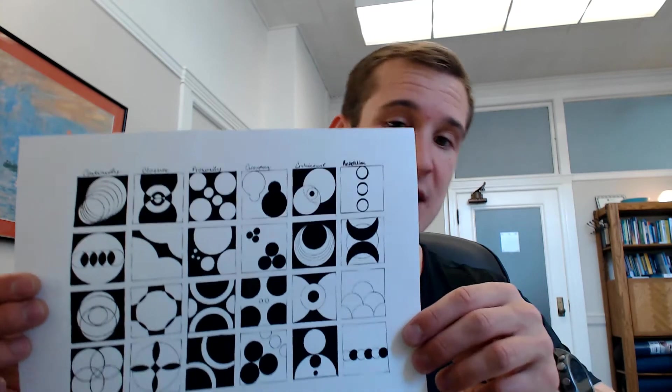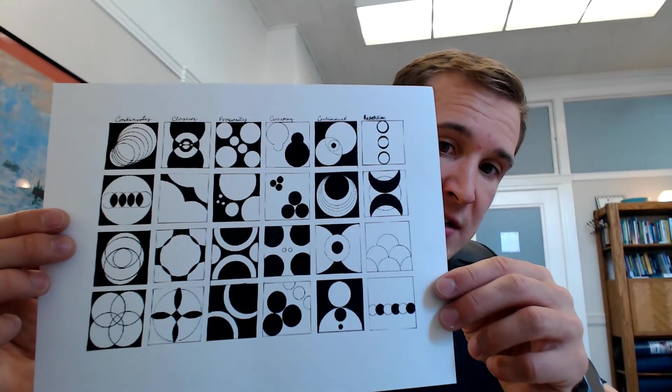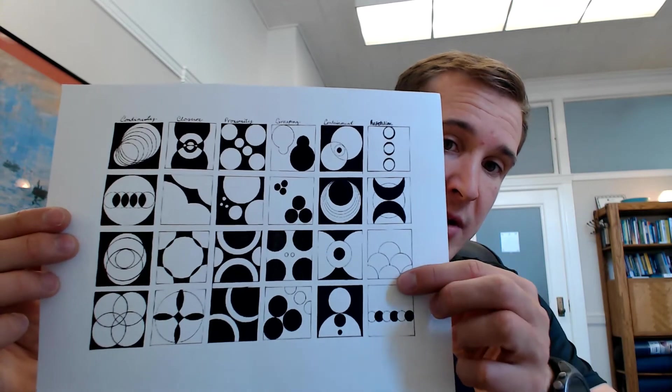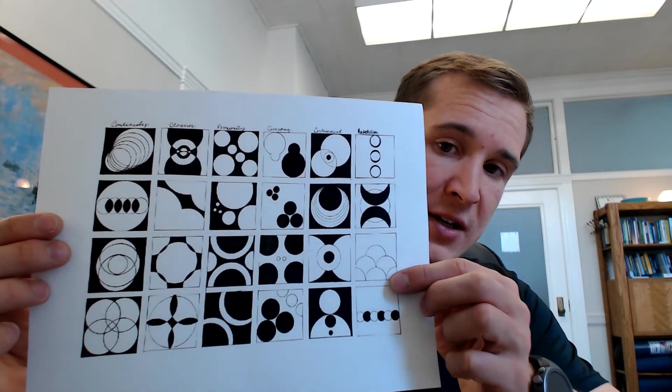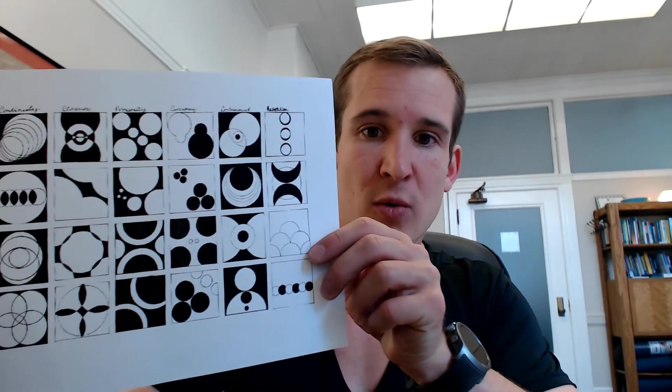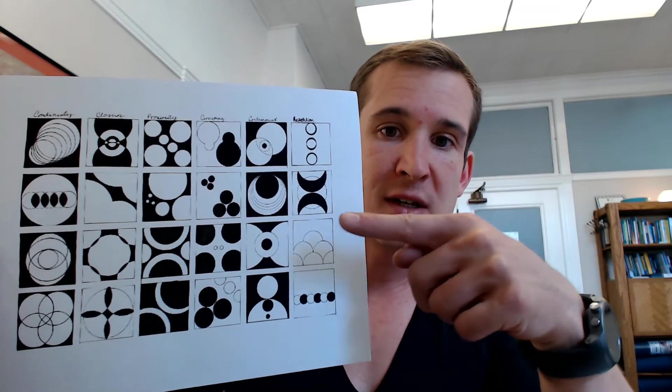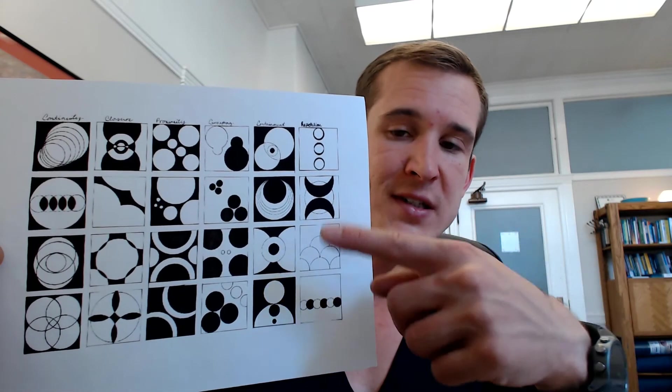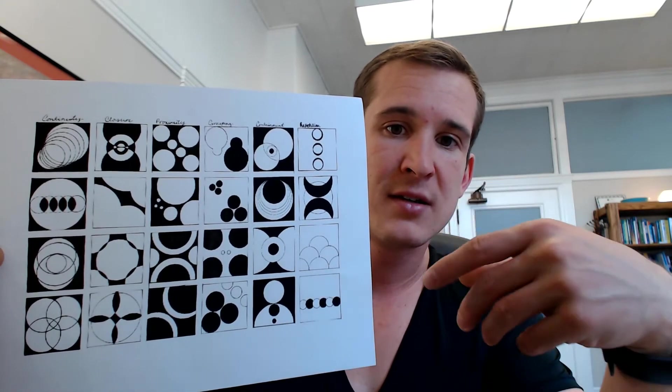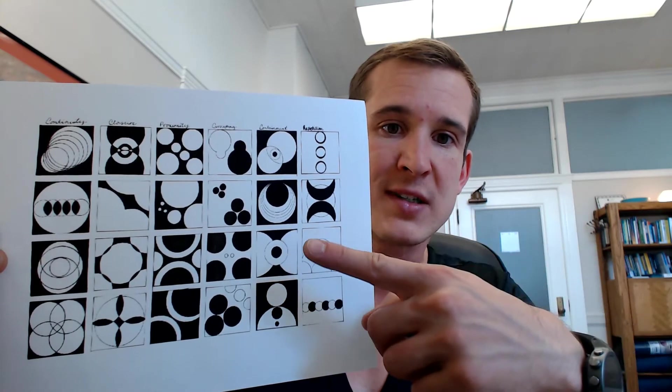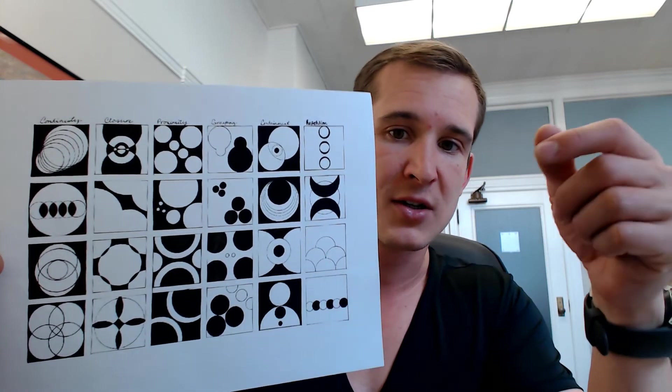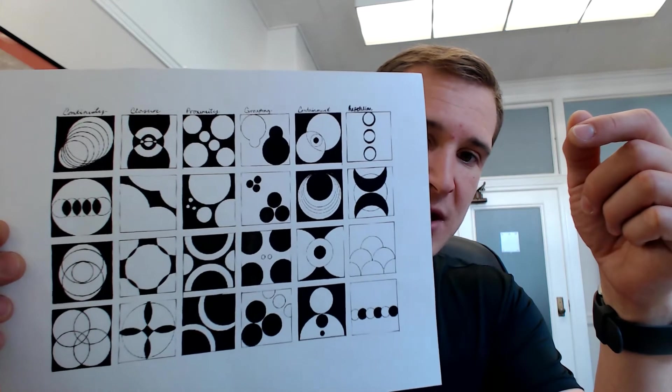So just to give a few more examples here, looking at all these different patterns, we have repetition, how when we see things as repeating. We also have containment, how things are seen as held, grouping again, proximity, closure, and continuity. Just some fun visual perception stuff to take a look at.